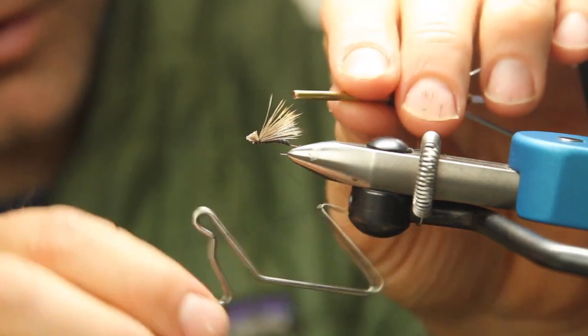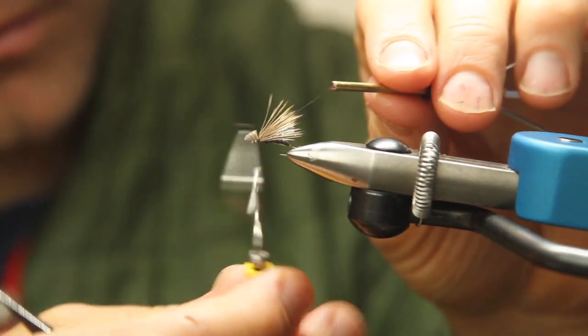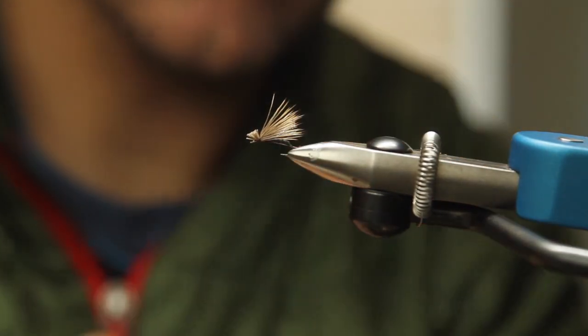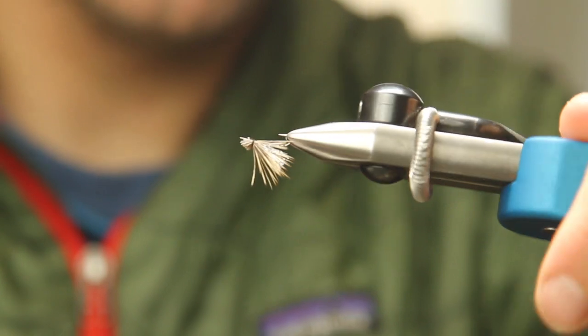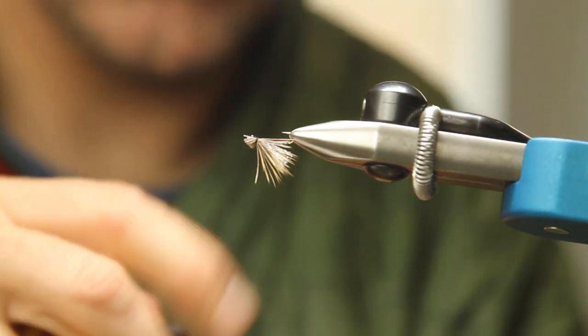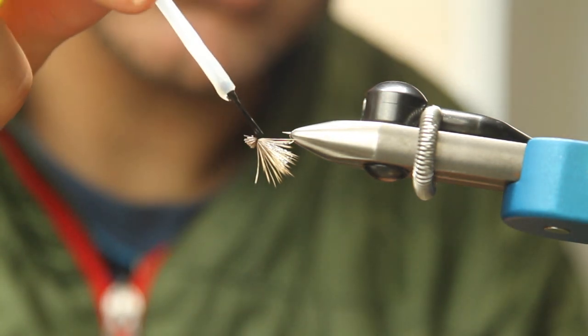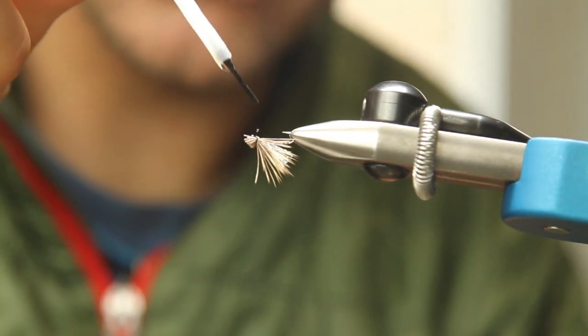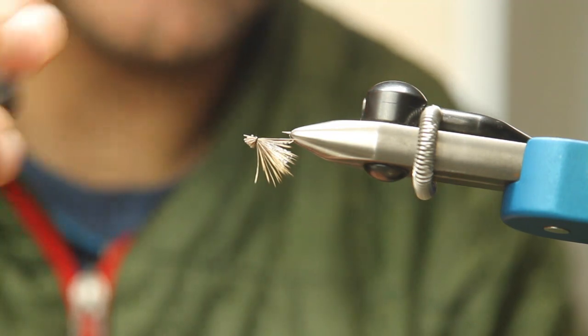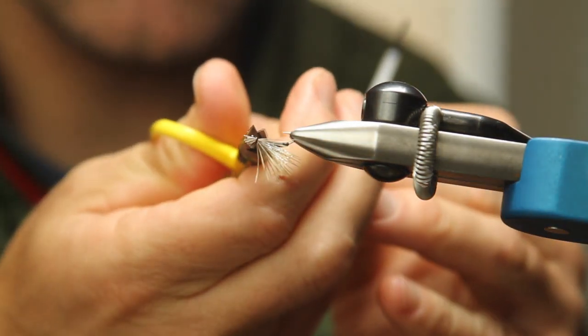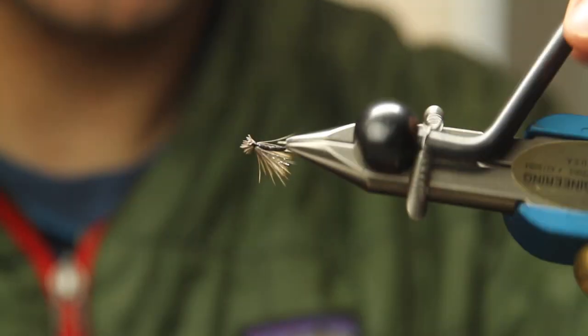Then come around a whip finish again. Like that. Trim your thread. Roll this guy over. Or dowel. Could be either or. And then we're going to put a little bit of varnish right there on those threads. Get rid of that little varnish guy there.